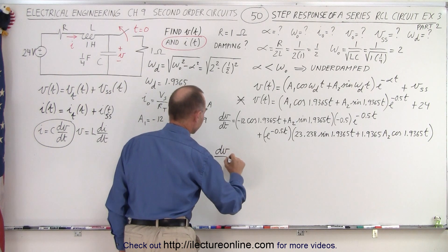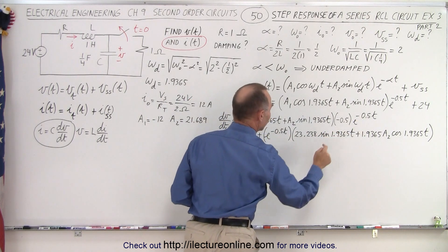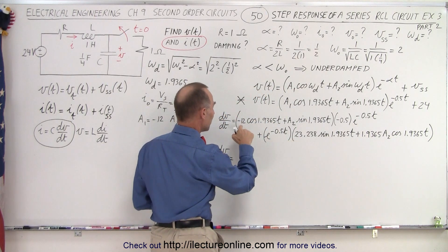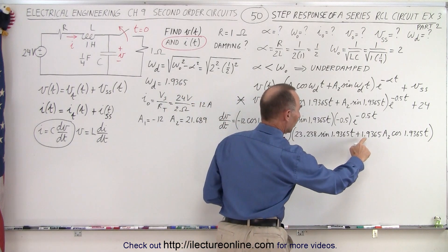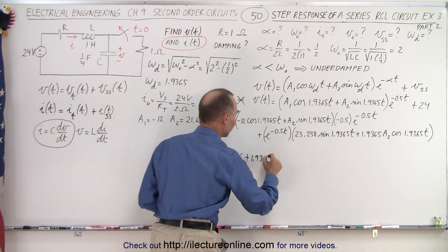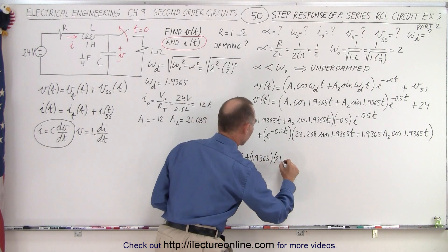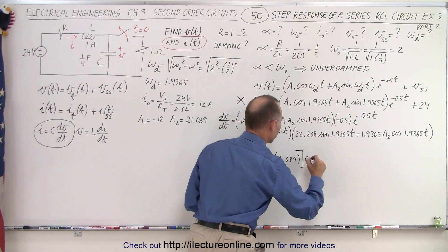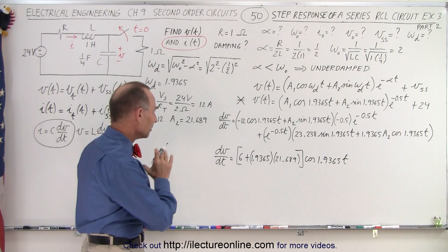So let's clean that up. We can now say that dV/dt is equal to... Notice we have the cosine times e to the minus 0.5t and again we have the cosine here times e to the minus 0.5t. We just have to combine the constants. So we have minus 12 times negative 0.5, that is 6. And then we have plus 1.9365 times A2, so plus 1.9365 times A2. Now A2 we have over here which is 21.689. And all that is multiplied times the cosine of 1.9365t.